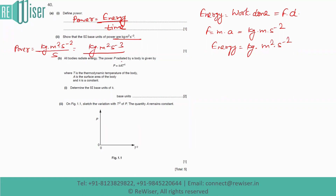The next part: all bodies radiate energy. The power P radiated by a body is given by P = kAT⁴, where T is the thermodynamic temperature, A is the surface area of the body, and k is a constant.